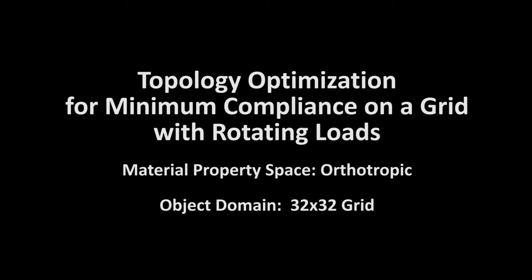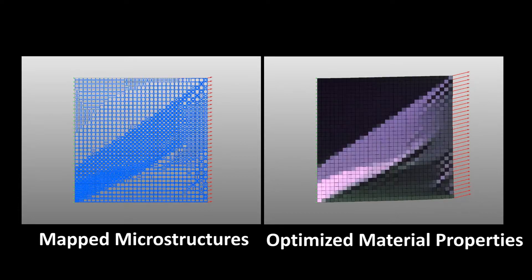We then run the same example on a higher resolution grid and show the smoothly varying material distribution.